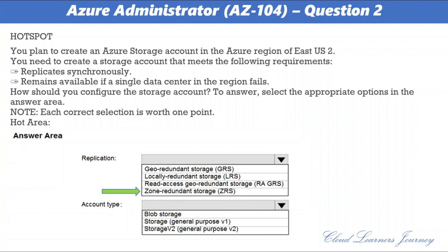The correct answer is zone-redundant storage (ZRS). ZRS replicates your data synchronously across three storage clusters in a single region. LRS would not remain available if a data center in the region fails. GRS and RA-GRS use asynchronous replication. The account type is storage v2, general purpose v2. GRS only supports general purpose v2.